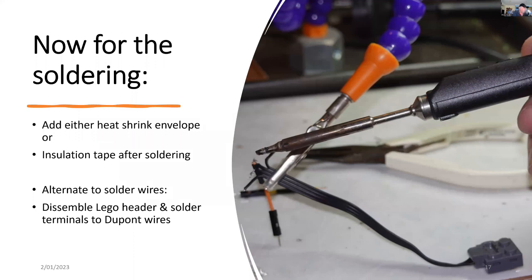And a bit of soldering. You can either solder onto the wire, or alternatively, you can disassemble the Lego header and solder the terminals directly with DuPont wires. I've chosen the former here.